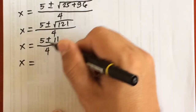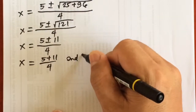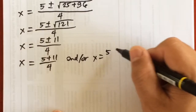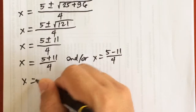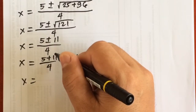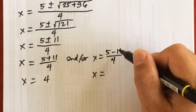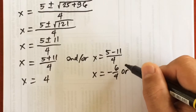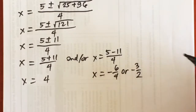So x equals 5 plus 11 over 4, and x equals 5 minus 11 over 4. For the first: 5 plus 11 is 16 divided by 4, which is 4. For the second: 5 minus 11 is negative 6 divided by 4, which simplifies to negative 3 over 2. So the answers are 4 and negative 3 over 2.